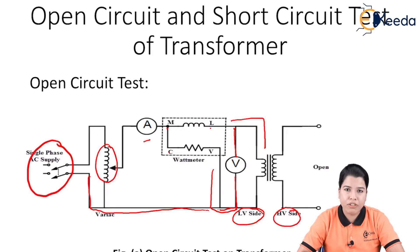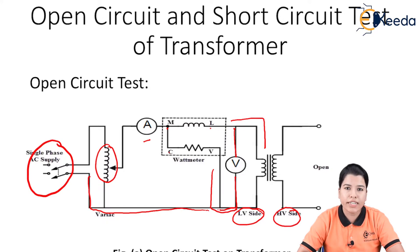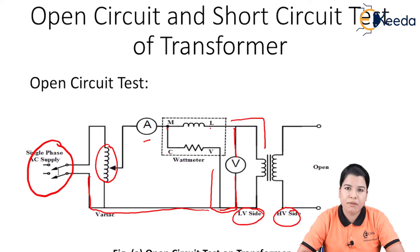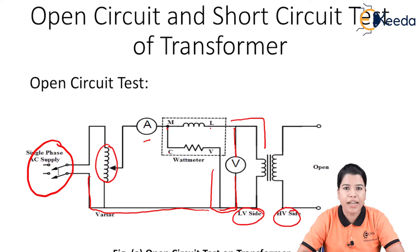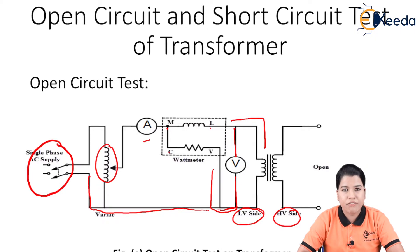When rated voltage is supplied to the primary winding, the secondary is open circuited, so a very small no-load current I0 flows through the ammeter. This no-load current is nearly 2% to 5% of the full-load rated primary current. Since the current is very low, the copper loss is negligible and can be neglected. Therefore, the wattmeter W will record only the iron losses.